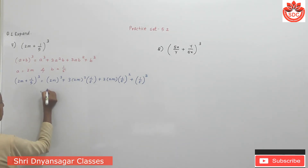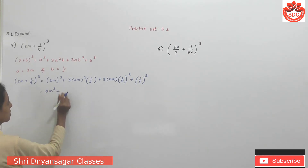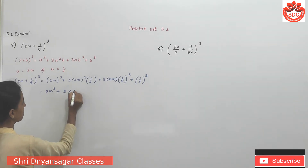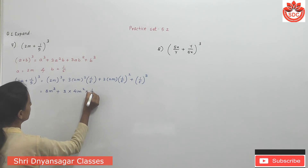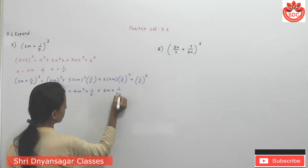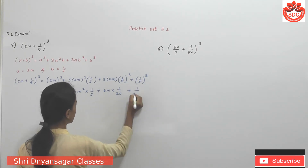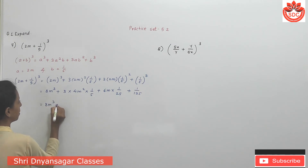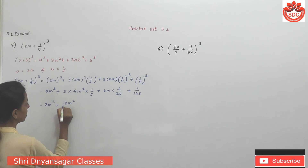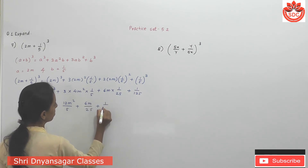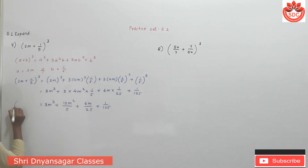Now simplify. Cube of 2 is 8, so (2n)³ = 8n³. Then 3 × 4n² × (1/5) = 12n²/5. Then 3 × 2n = 6n, and (1/5)² = 1/25, giving 6n/25. Plus (1/5)³ = 1/125. So the expansion is 8n³ + 12n²/5 + 6n/25 + 1/125.